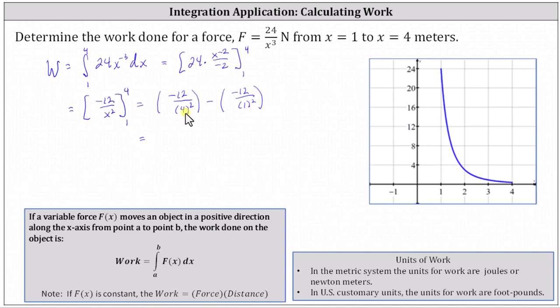Simplifying, negative 12 divided by 16 simplifies to negative 3/4ths. And then we have minus negative 12 or plus 12, which gives us 11.25.